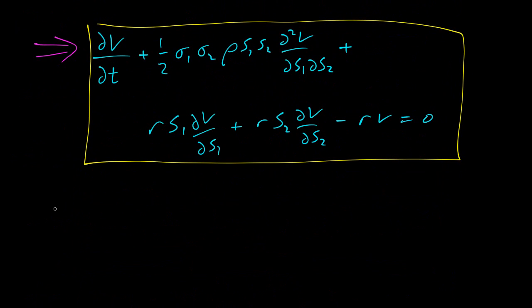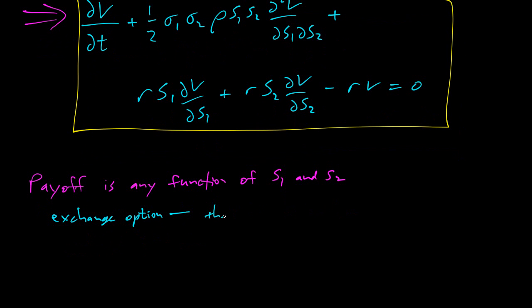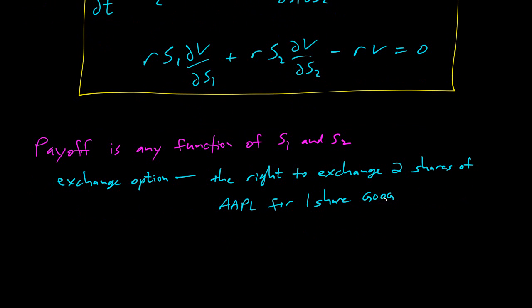So what does that mean? That means we can do a payoff for options that is any function of S1 and S2. So what are some examples? So one example is an exchange option. So an example of an exchange option is I have the right to exchange two shares of Apple, AAPL, for one share, Google, GOOG. So at expiration, I have the right but not the obligation to exchange two shares that I own of Apple for one share of Google.